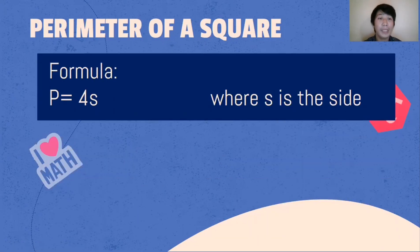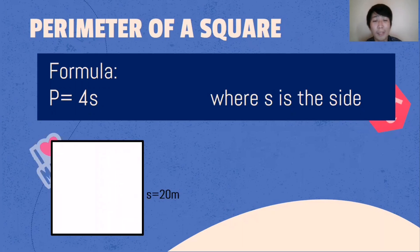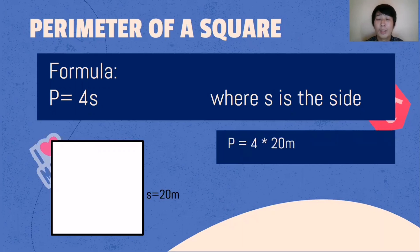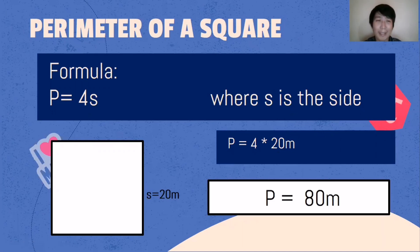Let's have another example using the same formula: Perimeter = 4 × side. Given the side is equal to 20 meters. Perimeter = 4 × 20 meters = 80 meters. The perimeter of the given square is 80 meters.